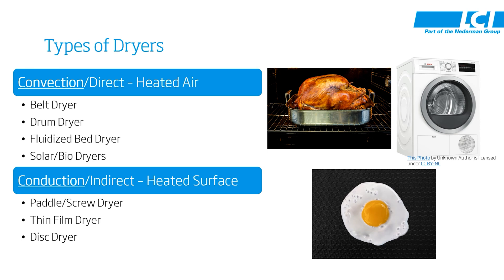A drum dryer is very similar to a clothes dryer. Both use a rotating drum to mix or agitate the medium and heated air streaming through it to evaporate the moisture. A drum dryer is evaporating water from sludge, and a clothes dryer is evaporating water from clothes.